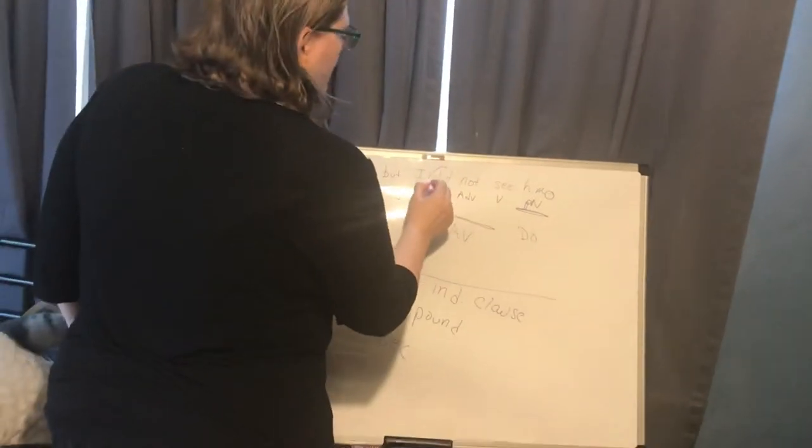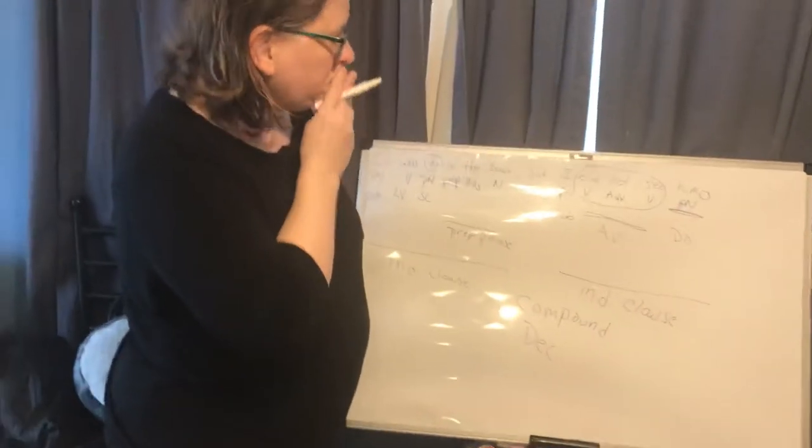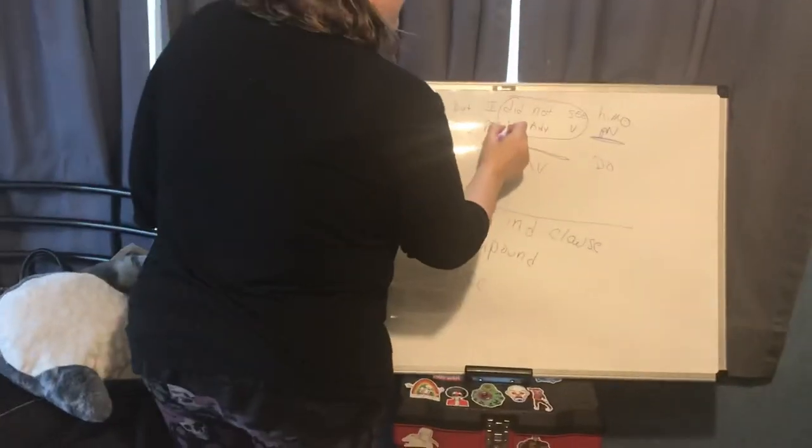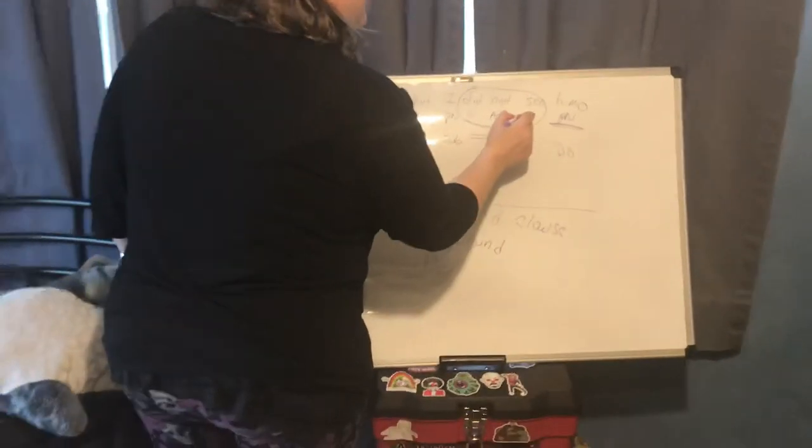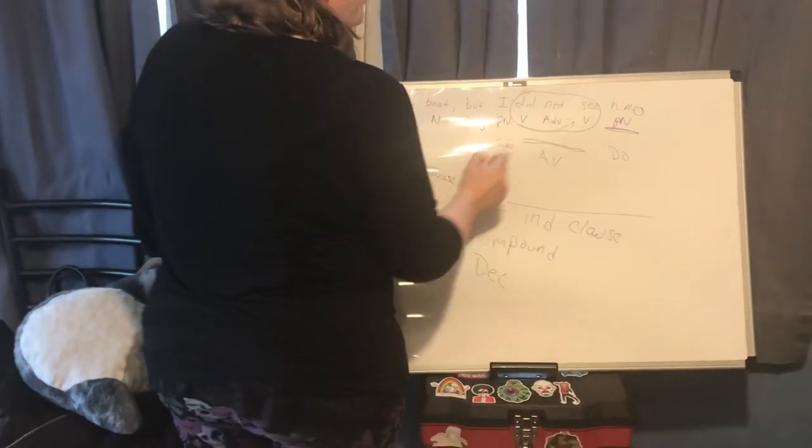Let's also look at something. This is a little curious here. We have this phrase right here, did not see. And as I said, this is one verb phrase. Did is assisting the verb see, did see. Then in between it, we have the word not.